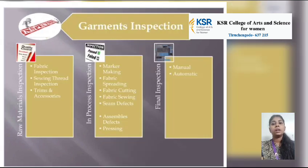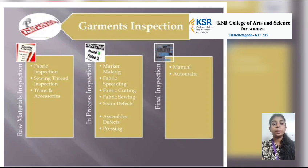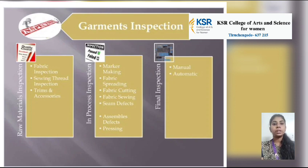Garment Inspection has three types: Raw Material Inspection, In-Process Inspection, and Final Inspection. Raw Material Inspection covers three areas: Fabric Inspection, Sewing Thread Inspection, and Trimming and Accessories. In-Process Inspection checks Marker Making, Fabric Spreading, Fabric Cutting, Fabric Sewing, and Side Effect. The third type, Final Inspection, includes Manual and Automatic methods.